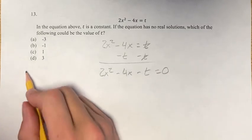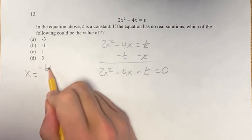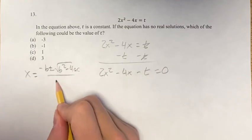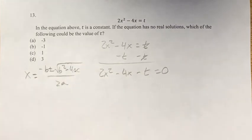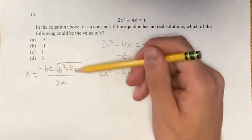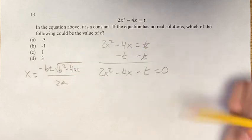and we could use the quadratic formula. So x is equal to negative b plus or minus the square root of b squared minus 4ac over 2a. And if this equation has no real solutions, that means that the square root here is taking the square root of a negative number.